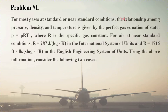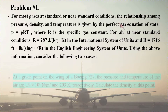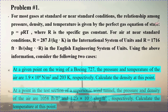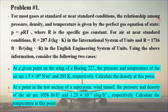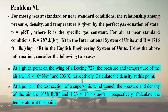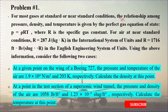Problem 1. For most gases at standard or near standard conditions, the relationship among pressure, density, and temperature is given by the perfect gas equation of state: pressure is equal to density times specific gas constant times temperature — P equals rho times R times T — where R is the specific gas constant for air at near standard conditions.